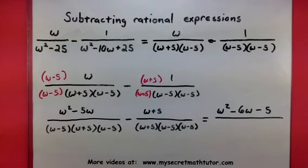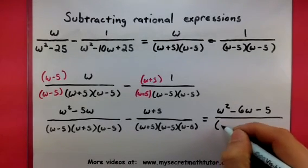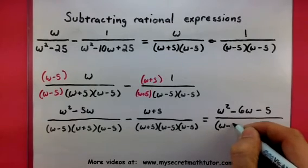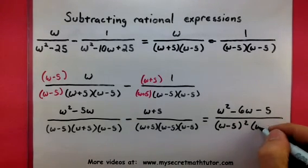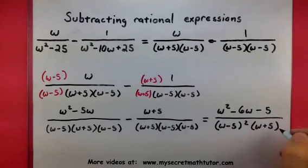Of course, since both the denominators are the same, I can write that here. Now, to make things even just a little bit simpler, notice how I have two w minus 5s? I'm going to write those as w minus 5 squared. And I'll go ahead and write that w plus 5.